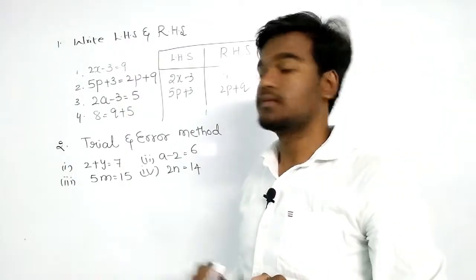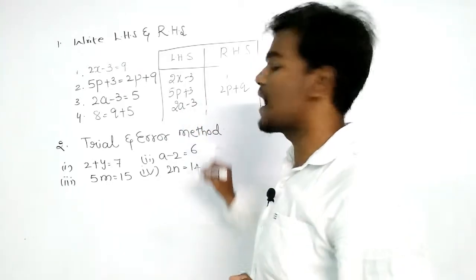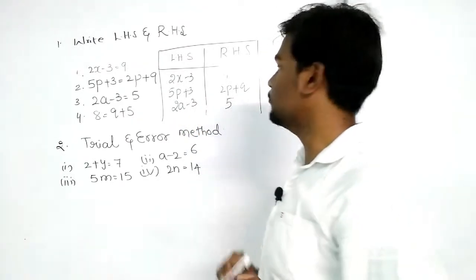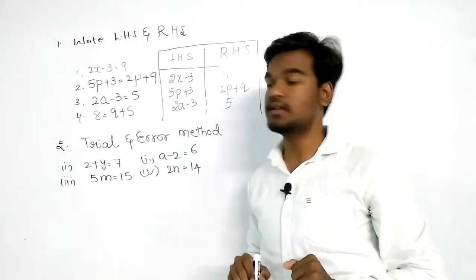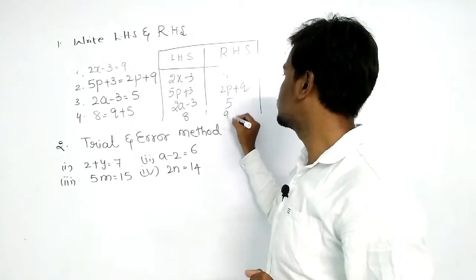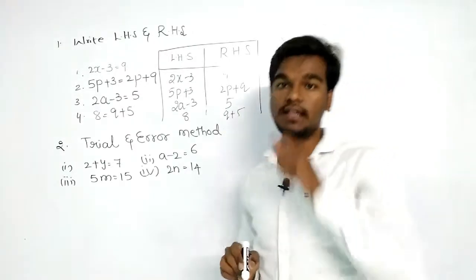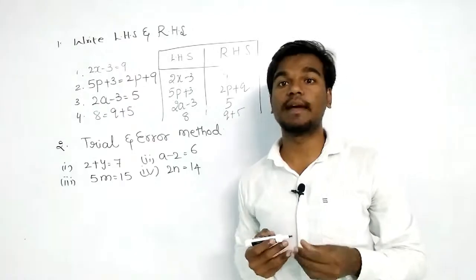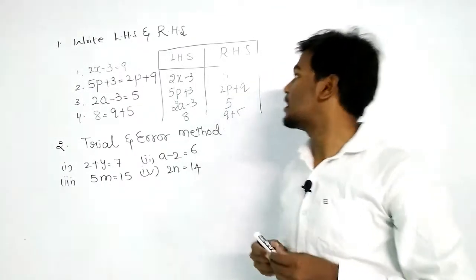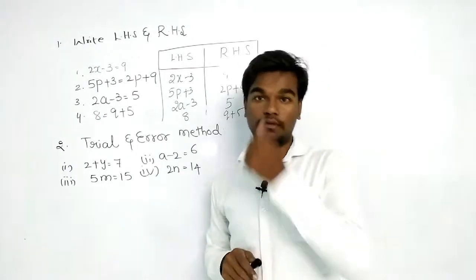For 2a minus 3 equal to 5, the left-hand side will be 2a minus 3 and the right-hand side will be 5. For 8 equal to q plus 5, the left-hand side is 8 and the RHS is q plus 5. With these examples you can easily identify left-hand side and right-hand side equations.